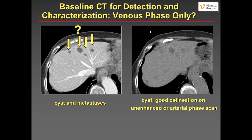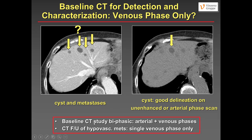How many phases do we actually need? In a patient with pancreatic cancer, if you just had a venous phase scan, you cannot differentiate cysts from metastases. But with an arterial phase — or previously an unenhanced scan — you clearly see one sharply demarcated, well-circumscribed cyst versus solid lesions. A baseline CT should always be biphasic. For known hypovascular metastases on follow-up, a single venous phase scan is sufficient for radiation dose purposes.